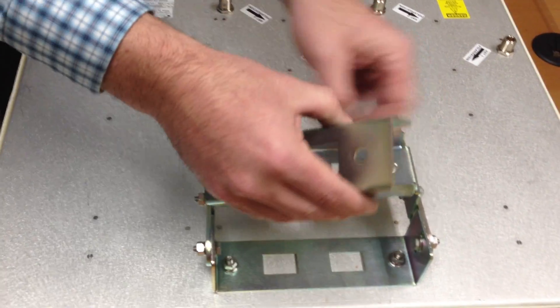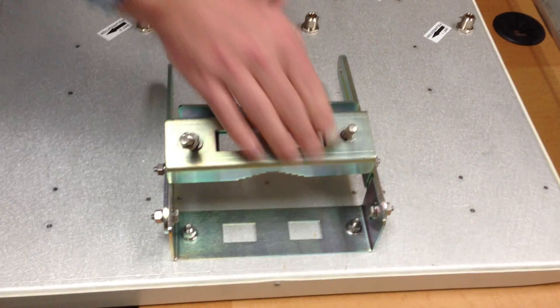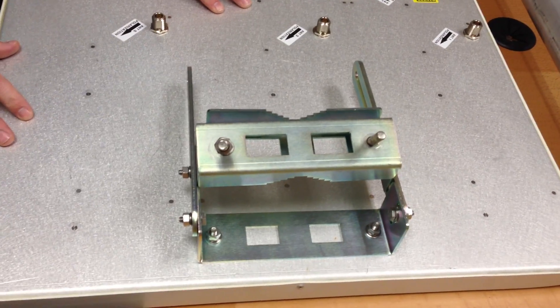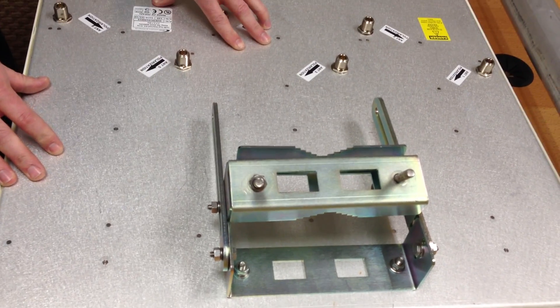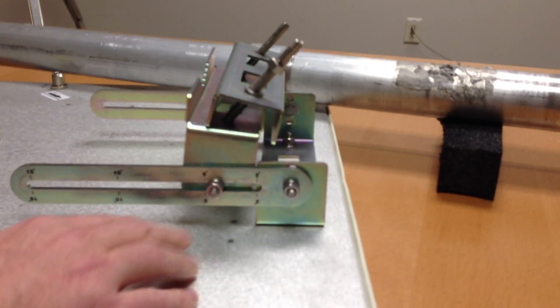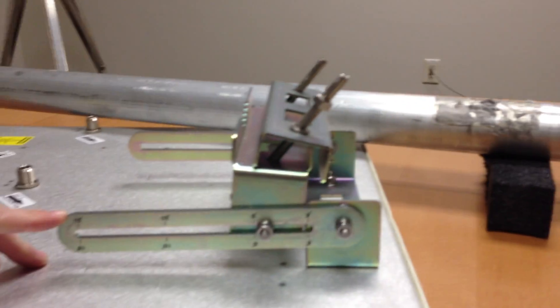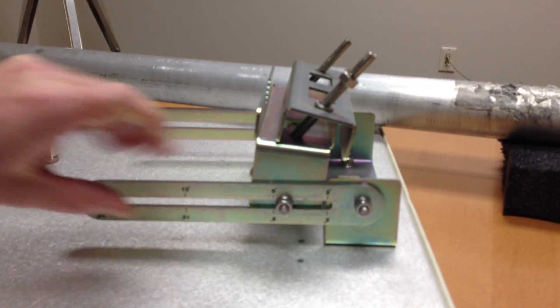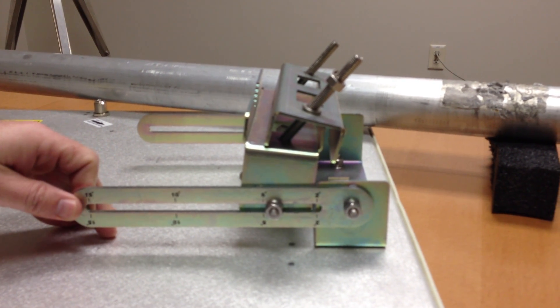The purpose of this slide arm is to allow you to have the ability to down tilt the antenna. And what you'll notice here on the side of the slide arm is that there are different increments of degrees of down tilt that you can select.